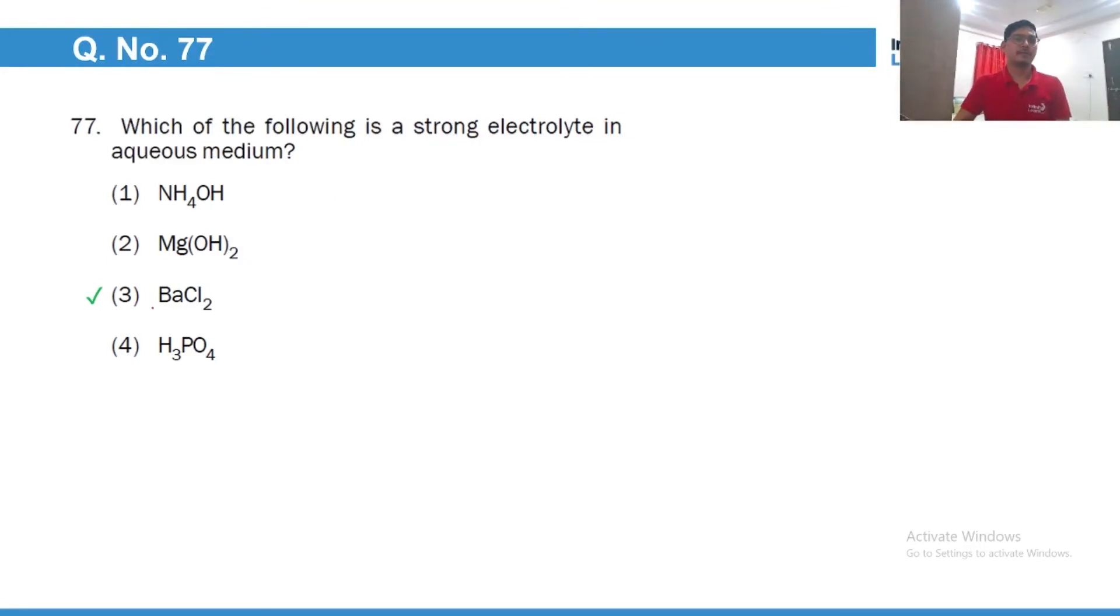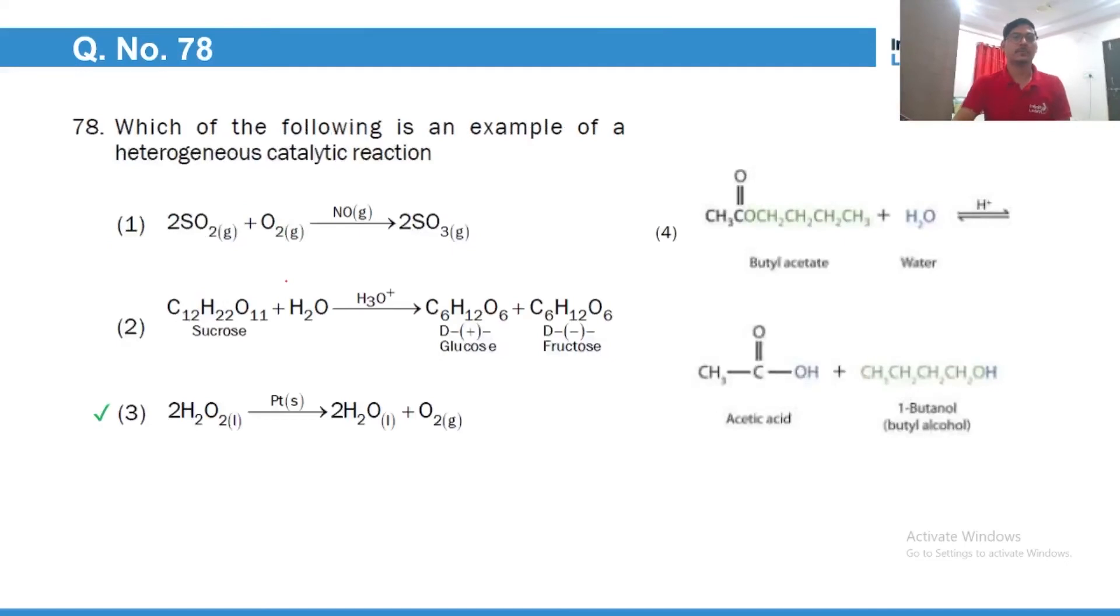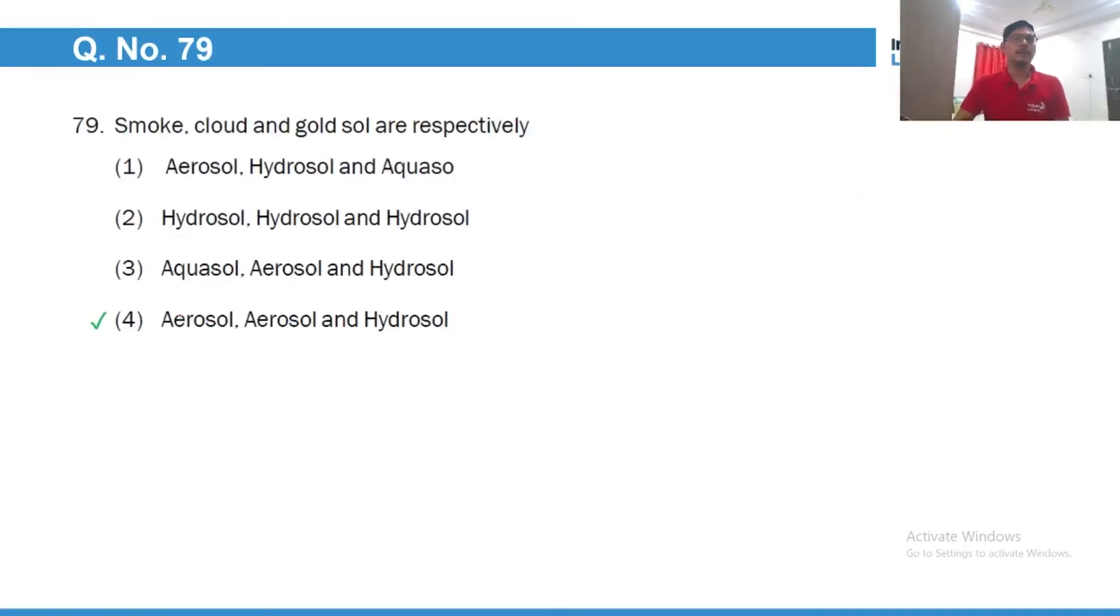Which of the following is a strong electrolyte? Of course barium chloride because weak base, weak acid. In a heterogeneous catalytic reaction, catalyst and the reactants must be in the same phase. Here one is liquid, other is solid, so this is heterogeneous catalysis. Of course aerosol and hydrosol.